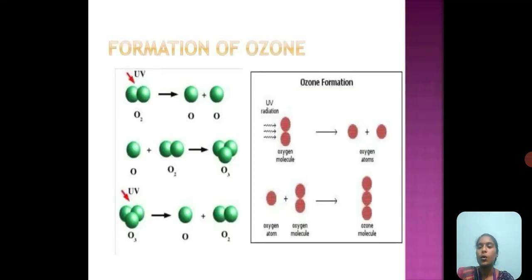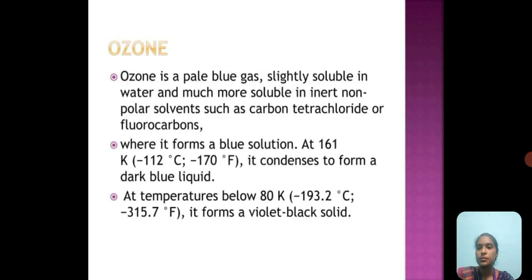Ozone is the allotrope of oxygen which forms when an oxygen molecule is exposed to UV light. We can get a nascent oxygen which on further reaction with the oxygen molecule produces ozone. Ozone is a pale blue gas slightly soluble in water and much more soluble in inert and non-polar solvents such as carbon tetrachloride or fluorocarbon. At 161 Kelvin it condenses to form dark blue liquid. Below 80 Kelvin it forms a violet-black solid. Thank you so much for listening.